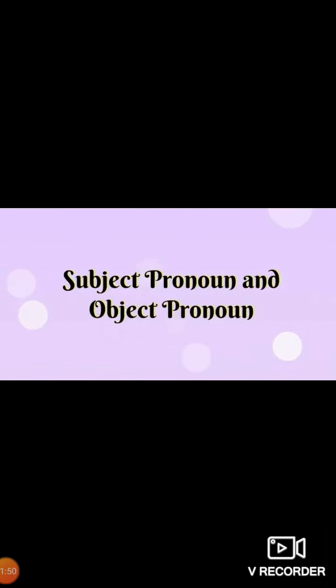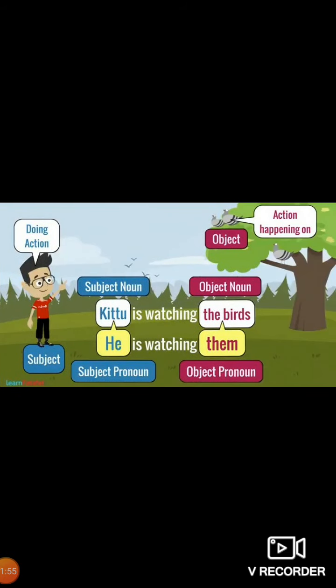Now we will see a side-by-side comparison of subject pronoun and object pronoun. The sentence is: Kitu is watching the birds. We need to replace the nouns with pronouns. For Kitu, we use 'he' — he is watching them. 'He' is the subject pronoun, and the action is happening on the birds, so birds becomes 'them', which is the object pronoun here.